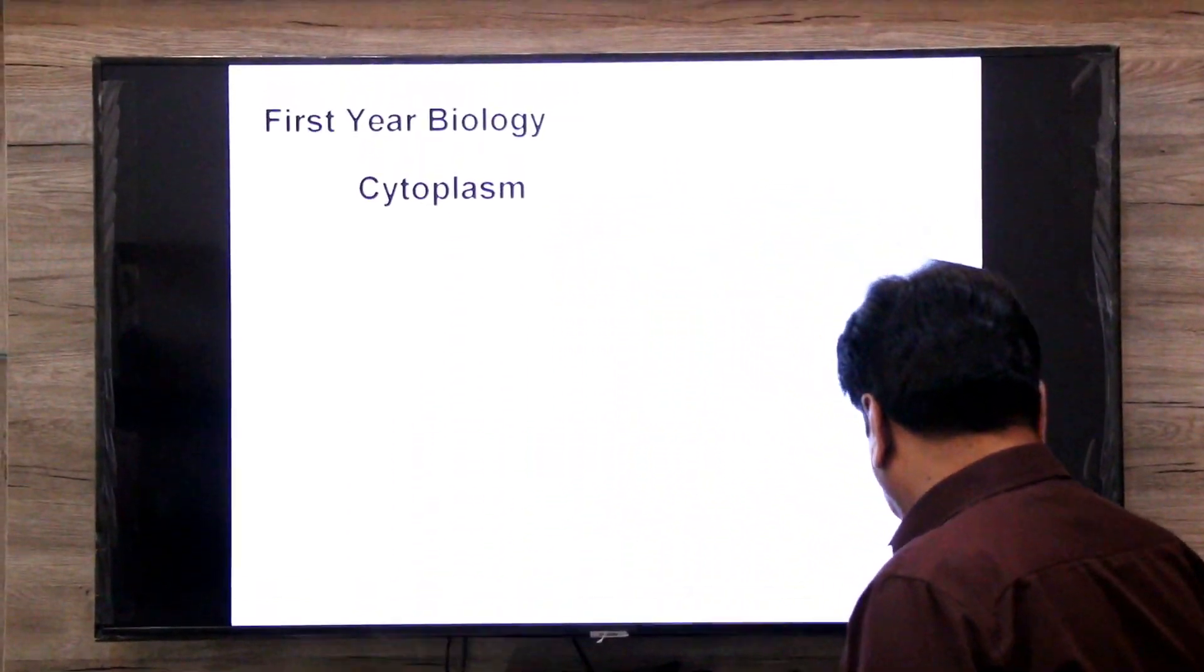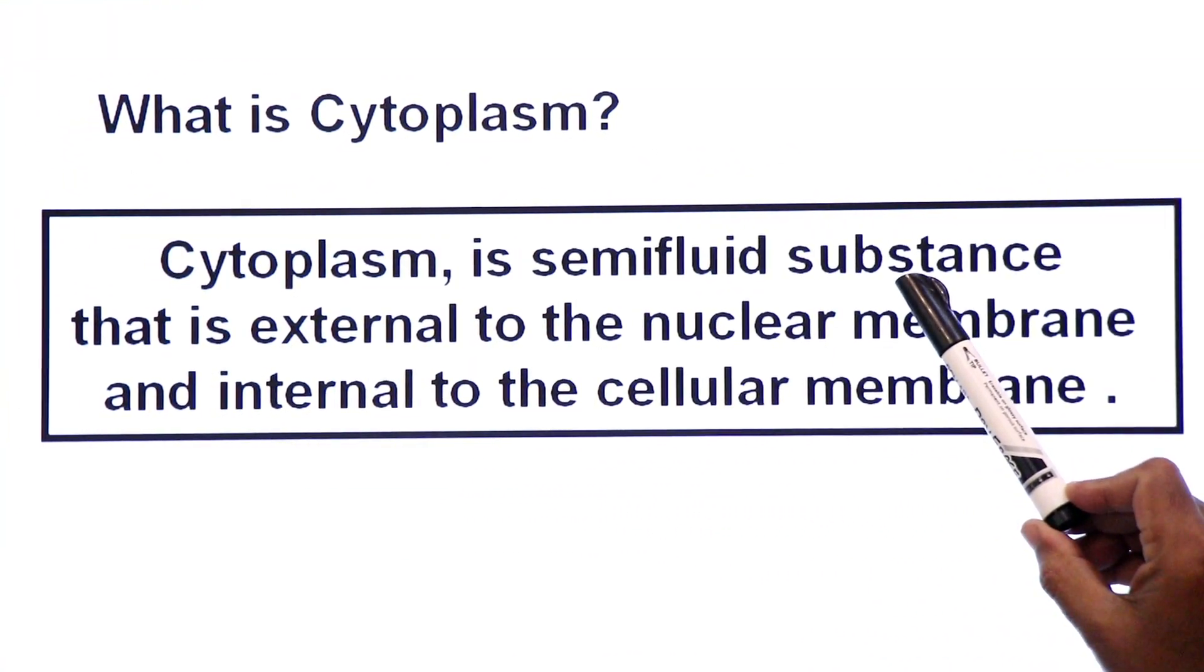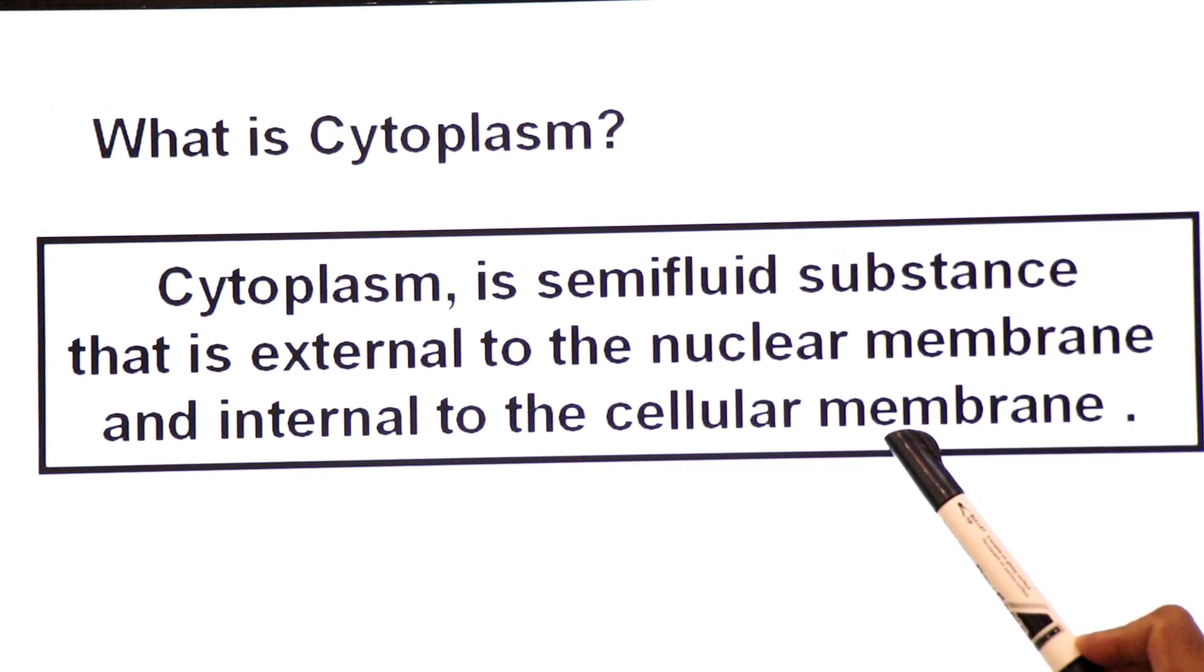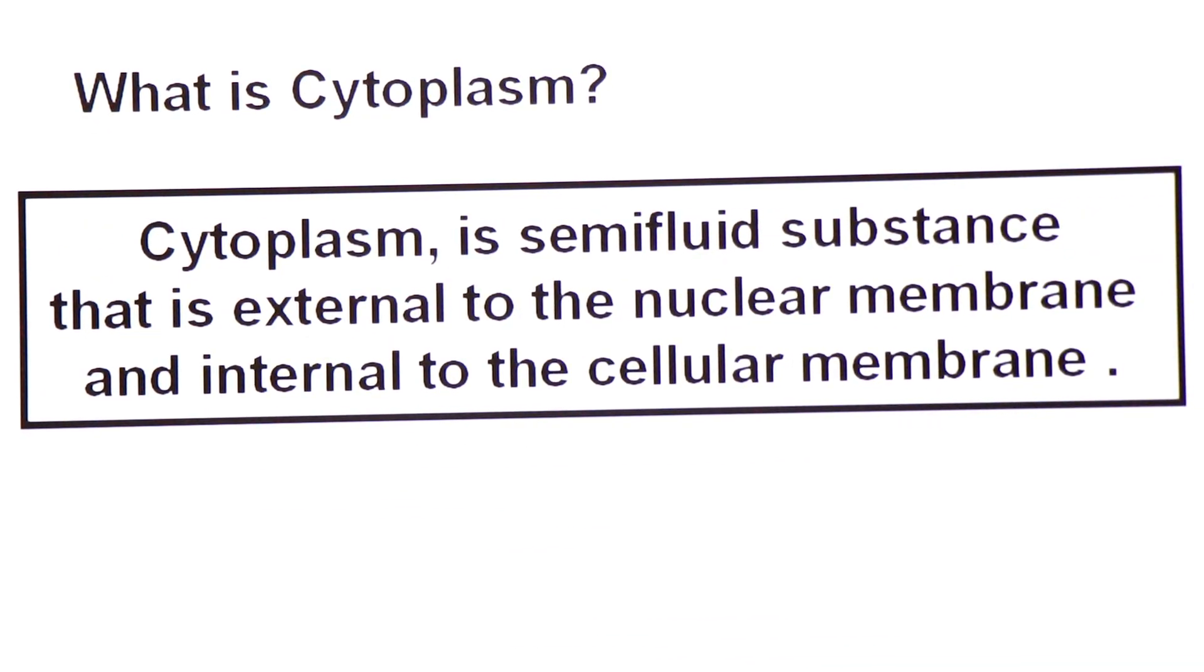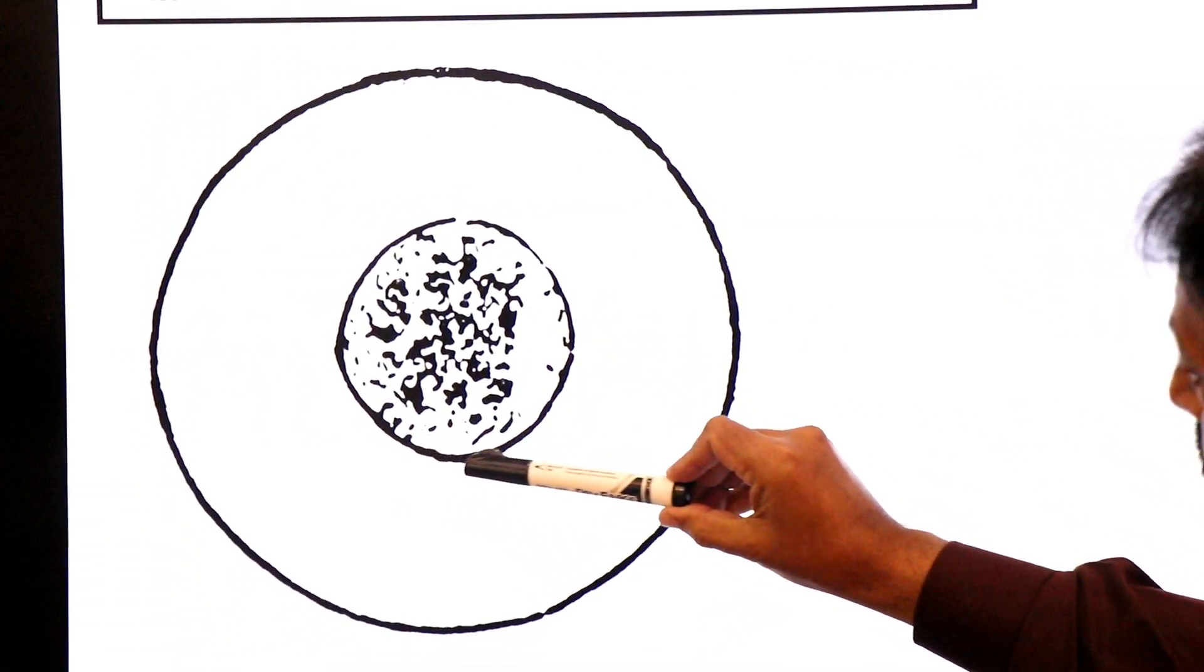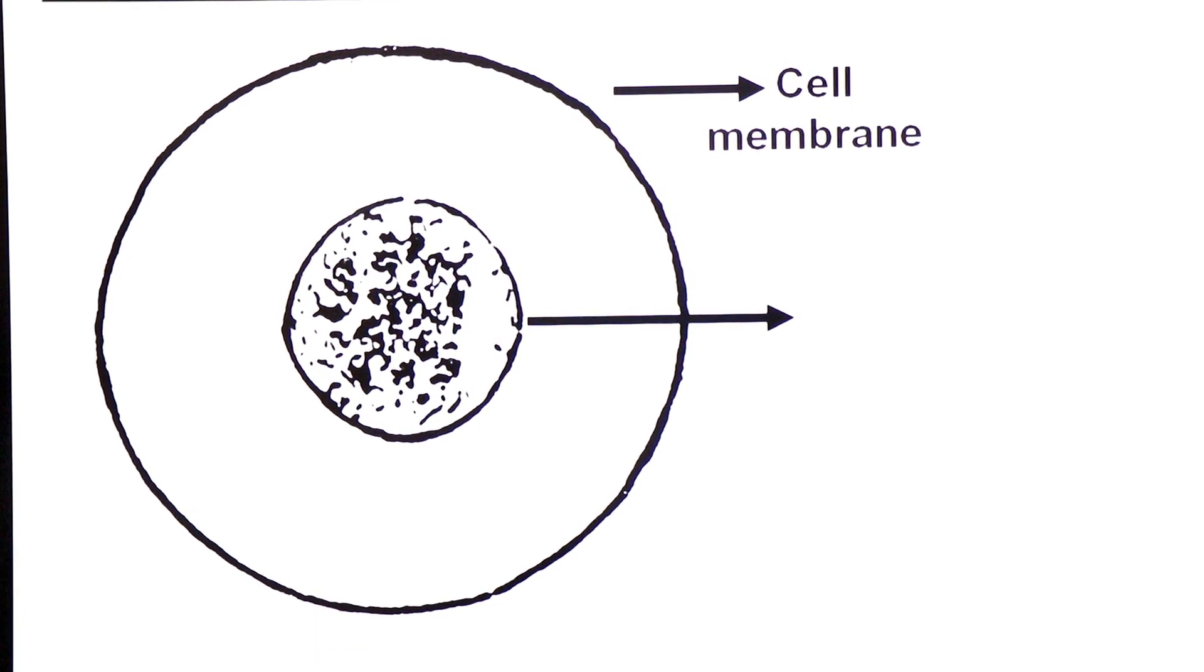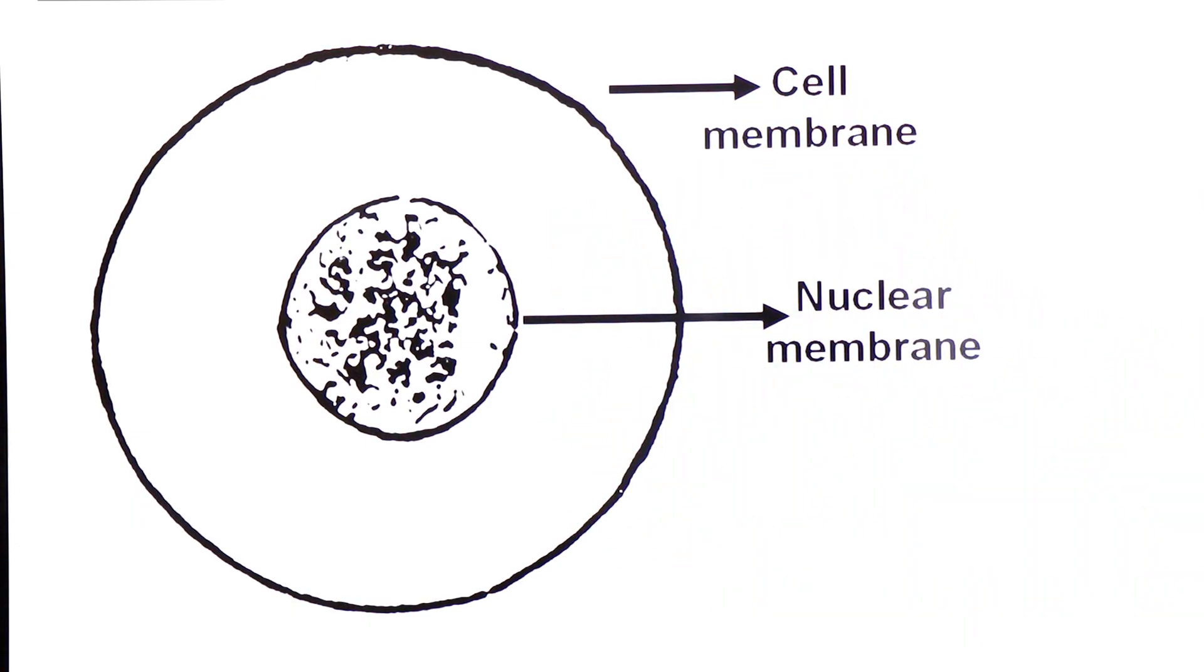What is the definition of cytoplasm? Now what is cytoplasm? Cytoplasm is semi-filled substance, that is external to nuclear membrane, and internal to cellular membrane. Now the outermost membrane of the cell is called cell membrane, and the membrane of nucleus is called nuclear membrane, and the portion between cell membrane and nuclear membrane is called cytoplasm.